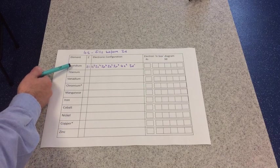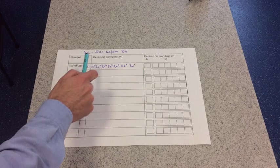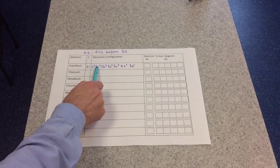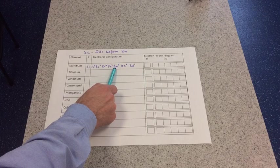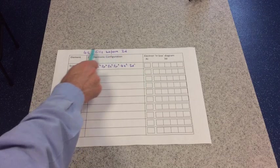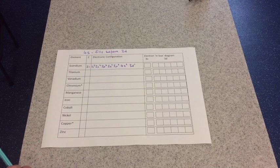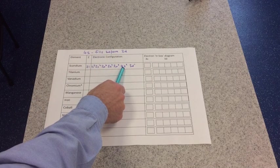We'll start with scandium. So it's got an atomic number of 21. So its electronic configuration is 1s2, 2s2, 2p6, 3s2, 3p6. And then if you can see there, that little rule that we teach you, 4s fills before 3d. So the 4s orbital is filled next.